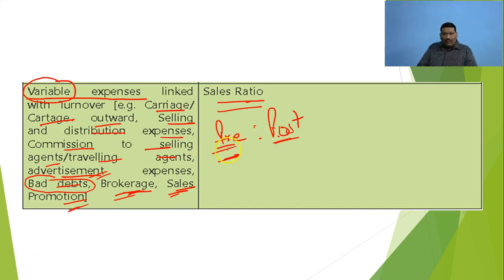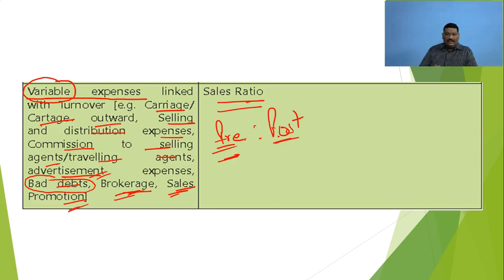In each and every question we have to calculate two ratios in working notes. One of them is time ratio and the second is sales ratio.